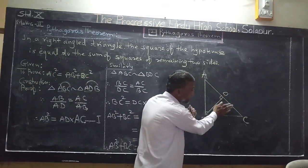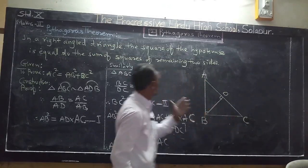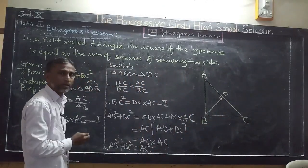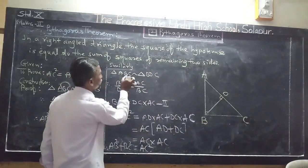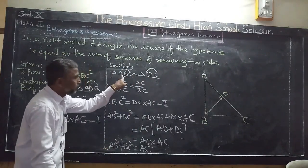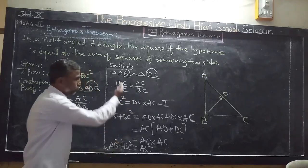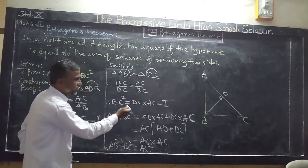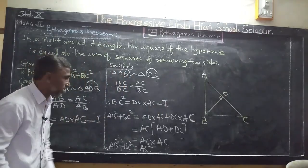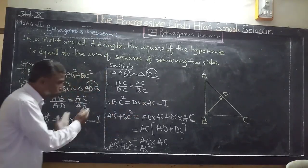Similarly, triangle ABC is also similar to triangle BDC by similarity in right-angled triangles. Therefore their corresponding sides are in proportion: BC/DC = AC/BC. By cross multiplication: BC² = DC × AC. Name this equation 2.